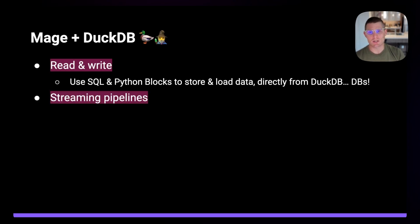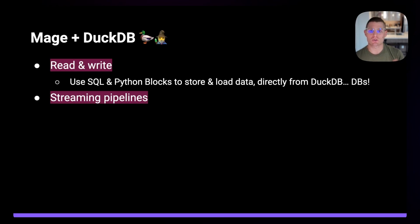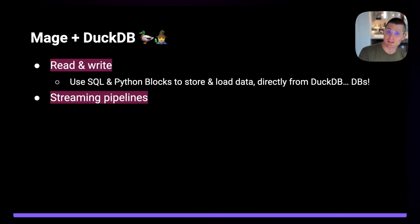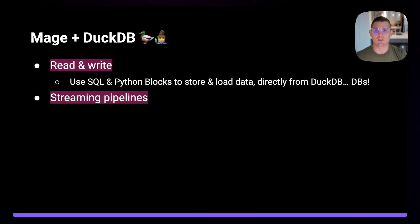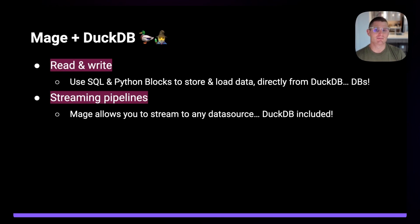Something that's cool about Mage is that any data source is a streaming data source and any destination is a streaming destination. So what that means is that you can also stream data directly to a DuckDB database. Say you had a Kafka topic or something that's outputting a stream — you could fetch that stream, process it using Mage, maybe make some light transformations, and then write it to your DuckDB data source.